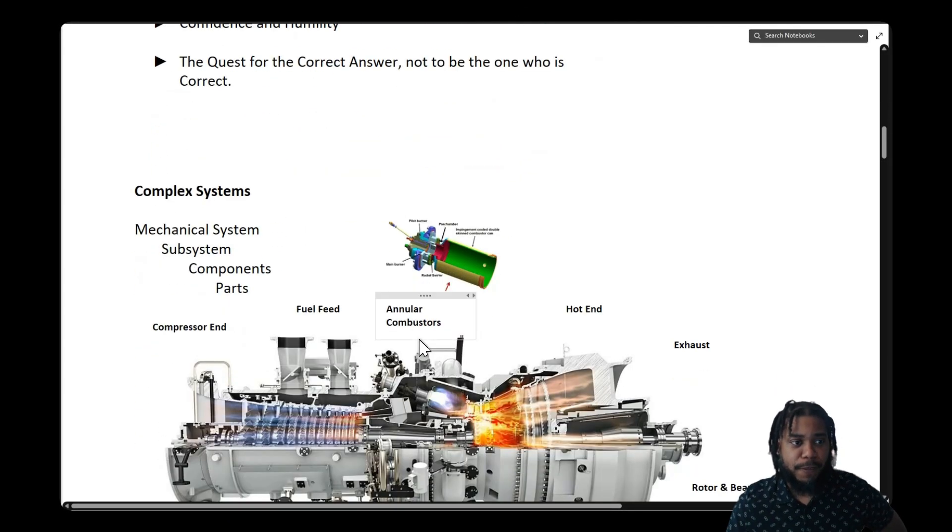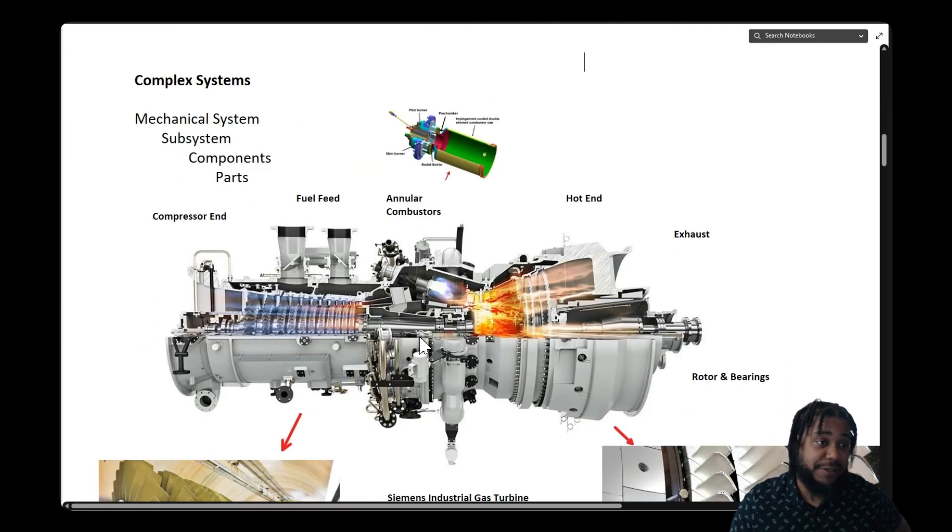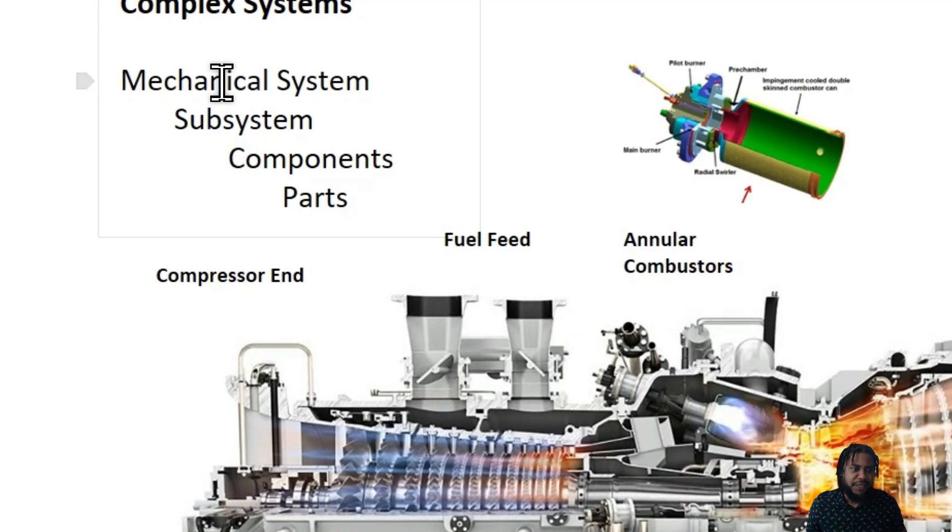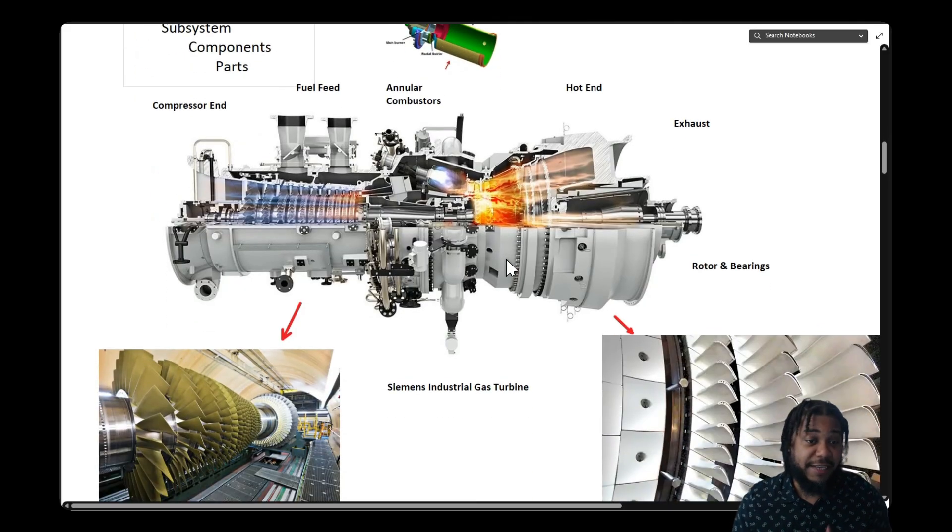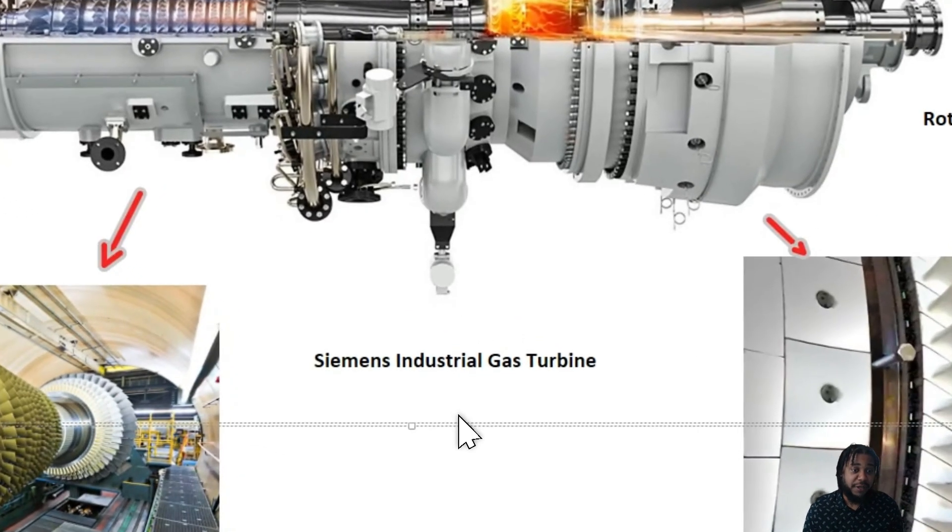When we talk about complex systems, we can think of just about any mechanical design. There's an entire system level, and then there are subsystems. In that subsystem there can be various components, and those components may have parts as well as threads, gears, bolts, things that connect those parts and components all together. An example that I am very familiar with are industrial gas turbines.